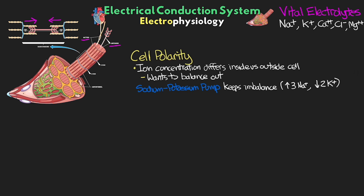By doing this, we're moving more positive ions out than we're bringing back in, so it actually creates a relatively negative environment inside the cell, consisting of a higher level of potassium, while outside the cell it consists of a higher level of sodium. This actually gives the cell a resting potential of around negative 70 to negative 90 millivolts.